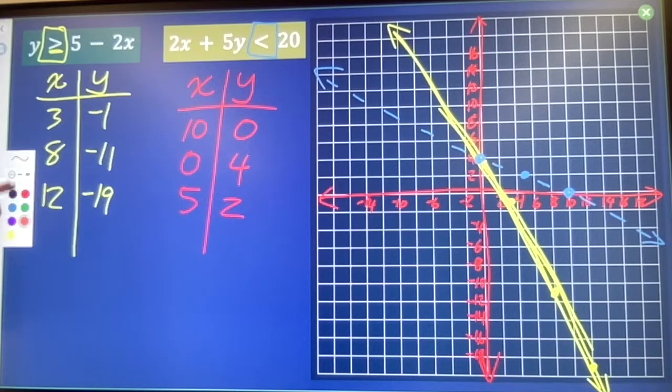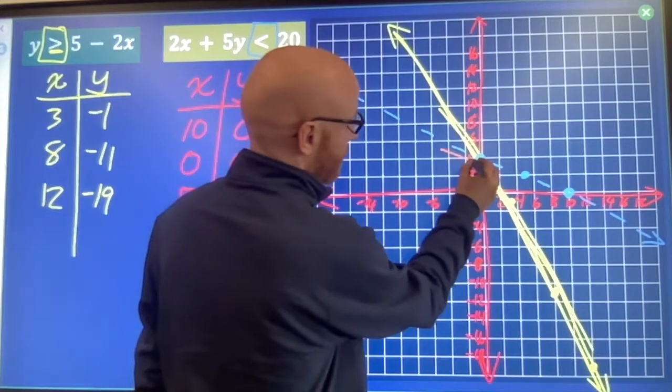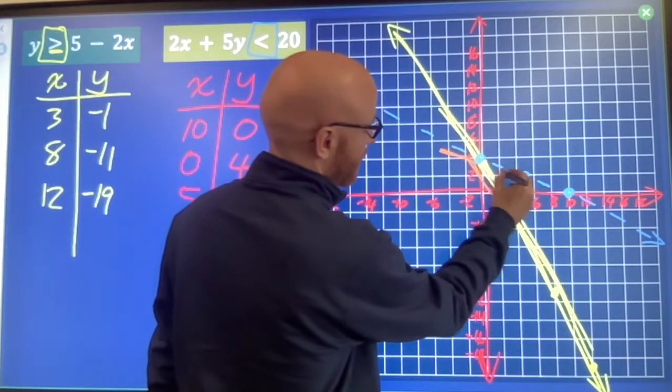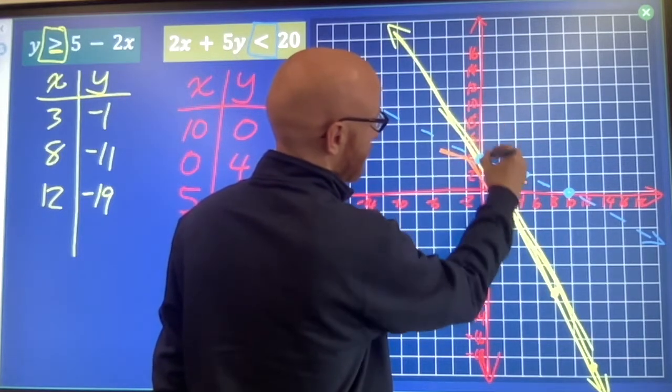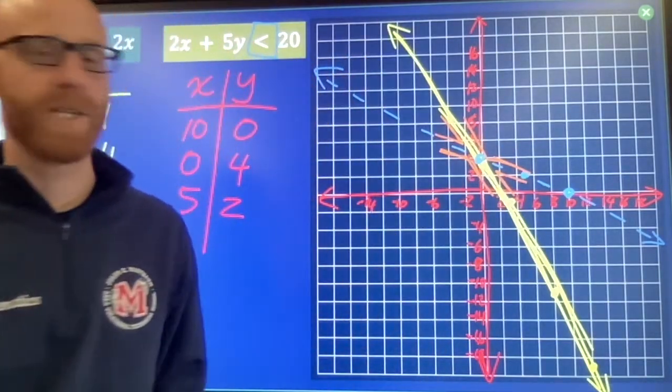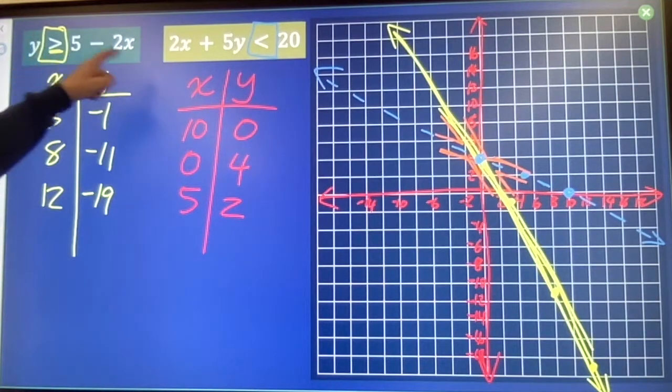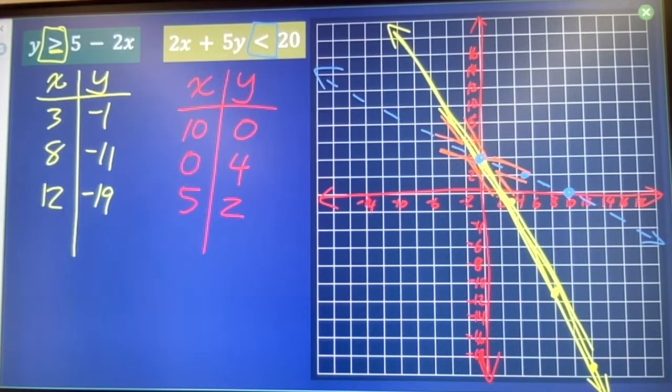Which means I've got four regions now on my board. We've got this region, this one, this one, this one. One of those regions contains all the possible answers. Make both of those true. The other three do not.